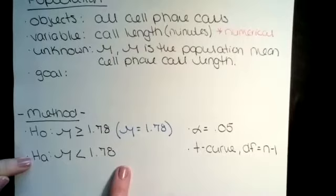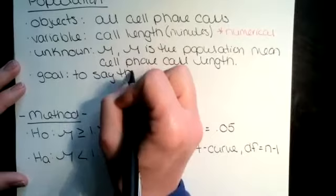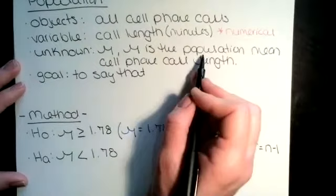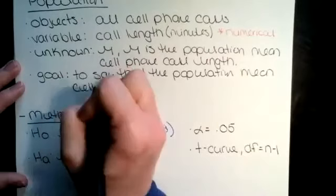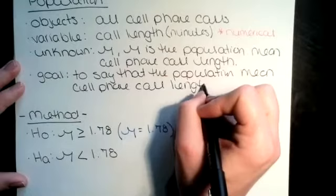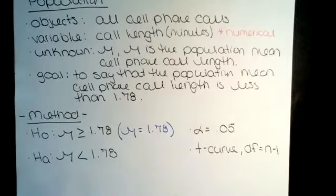Now I'm done with the method step, so I go back up to my goal. My goal is to show support for HA — to say that the population mean cell phone call length is less than 1.78 minutes. That's my goal: just taking the symbols and putting them into words.